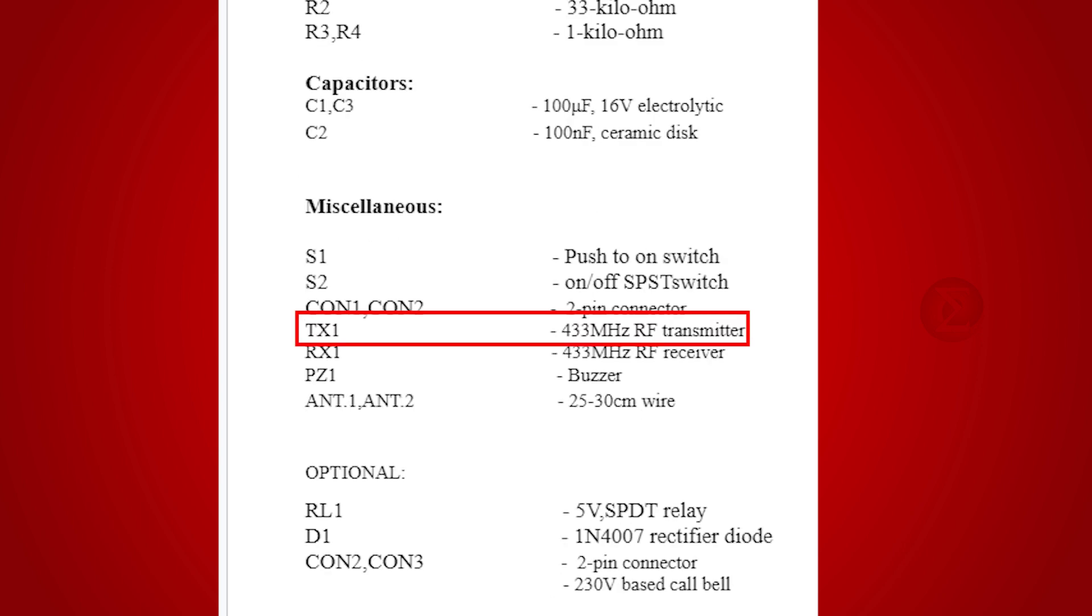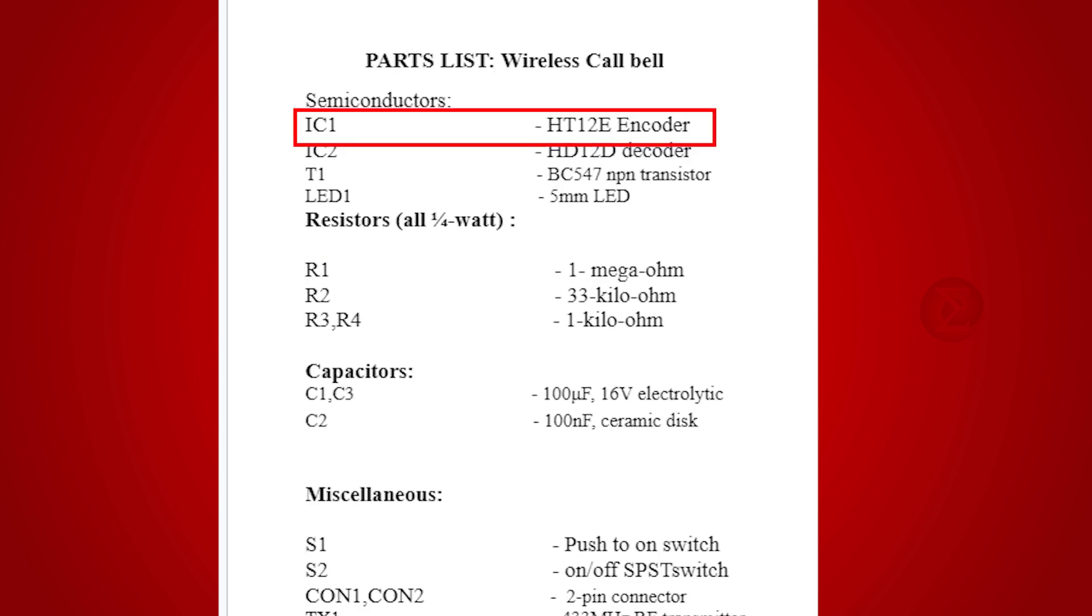You need to have a 433 MHz RF transmitter to transmit signal over radio frequency, a push button to ring the bell, and a HT12E encoder to complete the transmitter circuit.